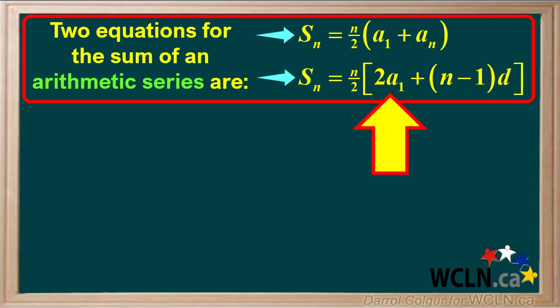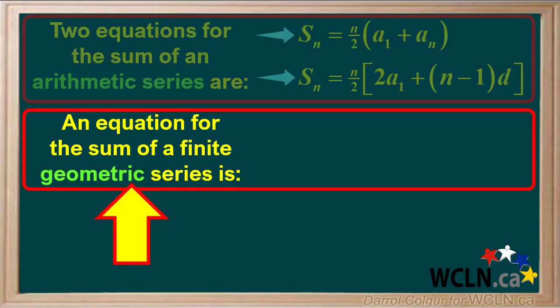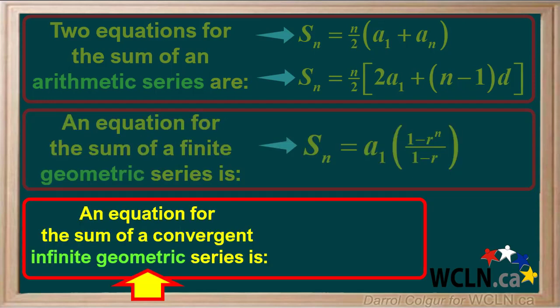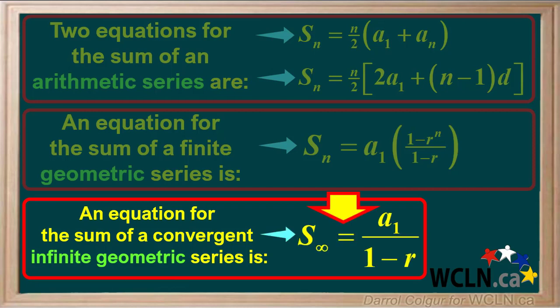The equation we use depends on the information we can find. An equation for the sum of a finite geometric series is Sn equals a1 times 1 minus r to the power n, over 1 minus r. The sum of a divergent infinite series cannot be calculated, but an equation for the sum of a convergent infinite series is S infinity equals a1 over 1 minus r.